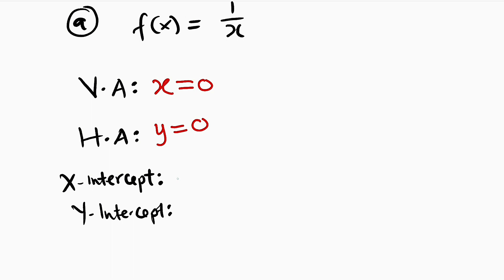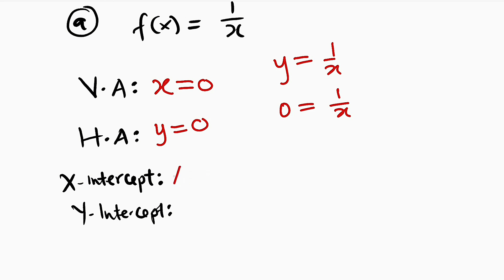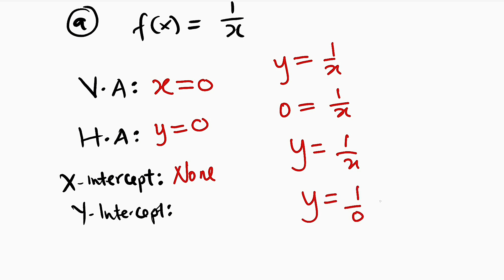For the x-intercept, we set y = 0. So 0 = 1/x — this is not possible because the numerator contains only a constant, therefore this function has no x-intercept. For the y-intercept, we set x = 0, giving us 1 divided by 0, which is undefined. Therefore we do not have a y-intercept either.